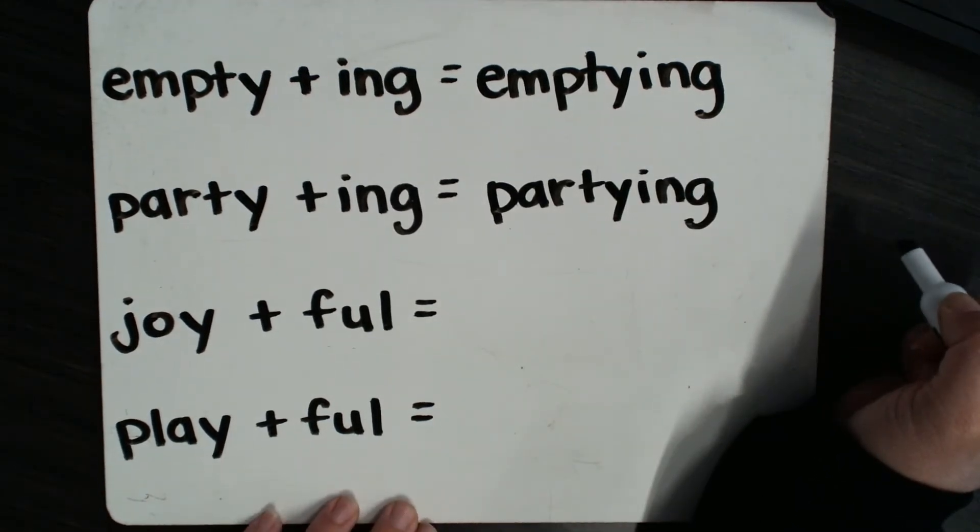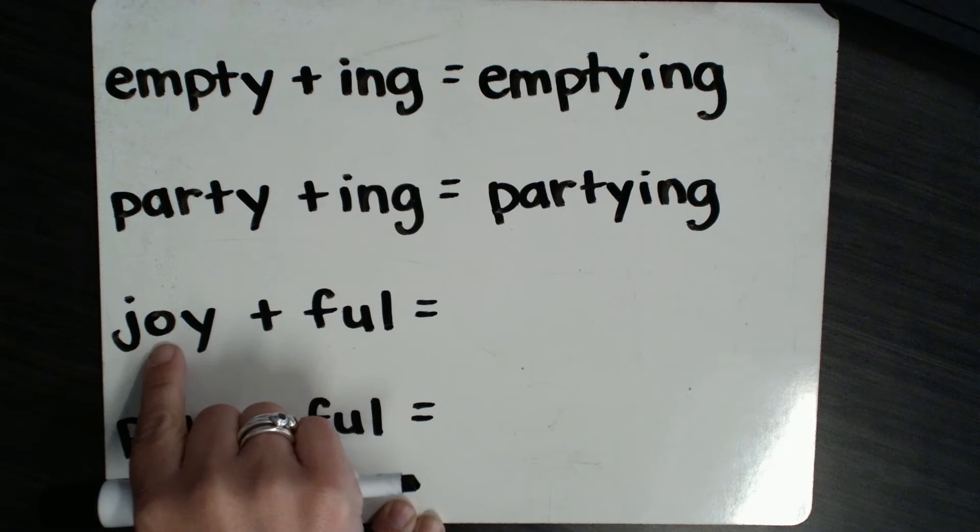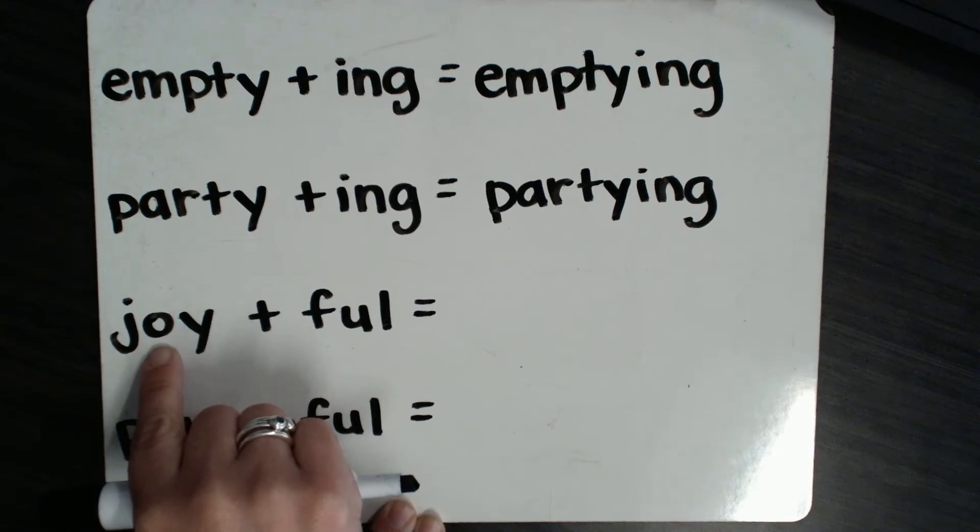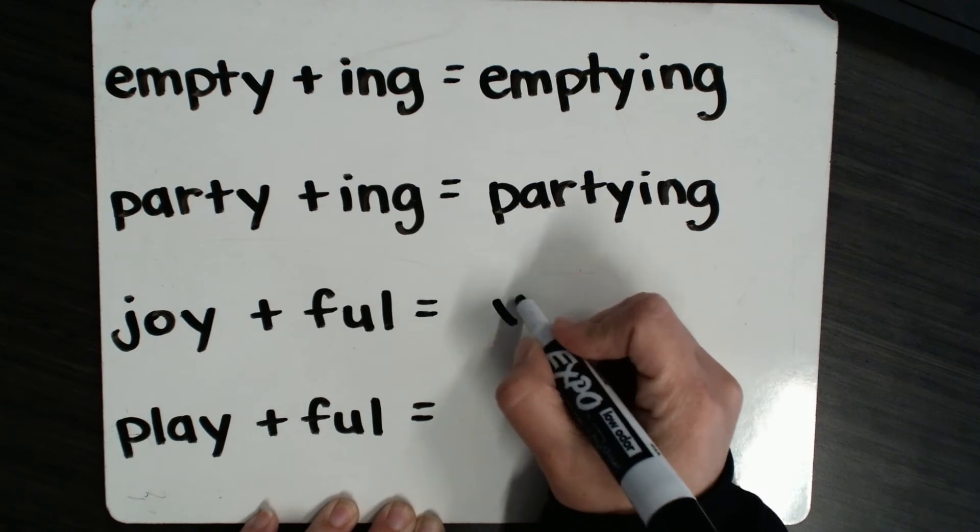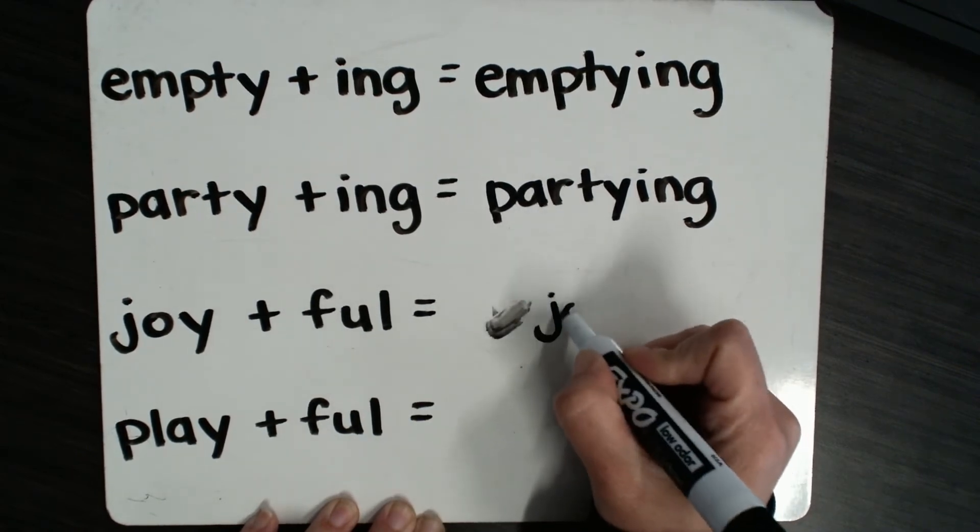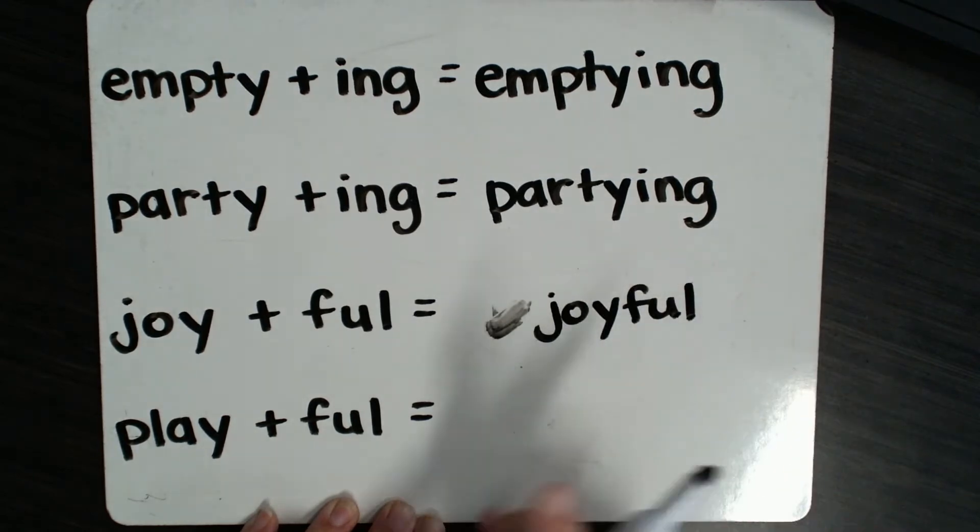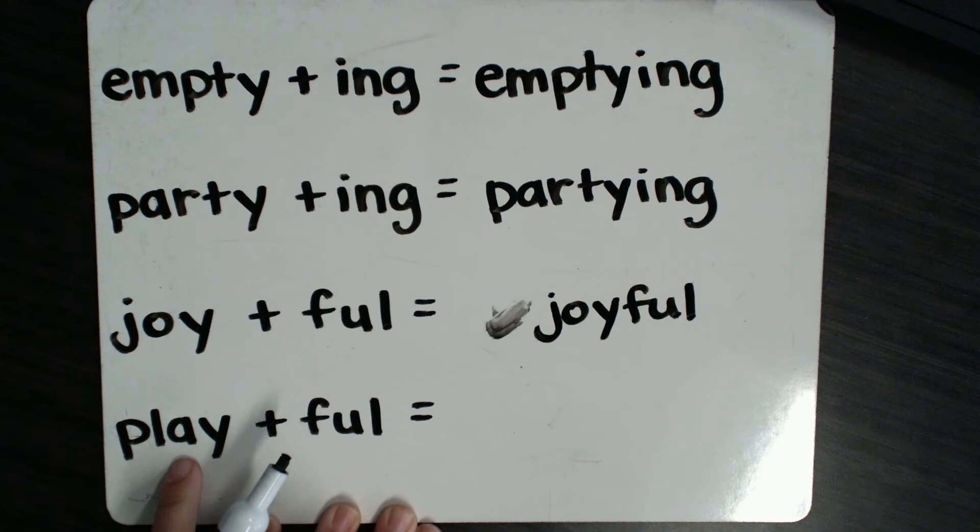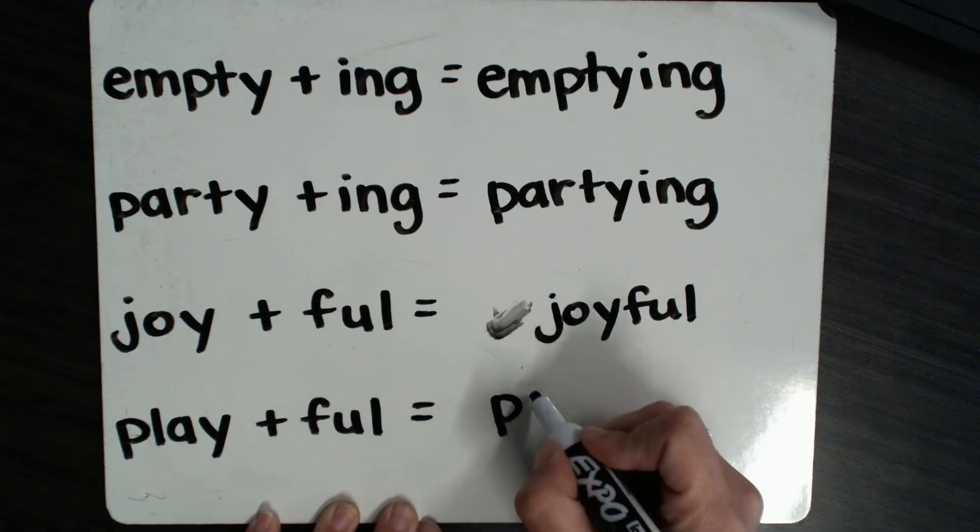Another time that we don't make the change is when the word ends in y, but it comes right after a vowel. So when we have vowel plus y, no change when we add that suffix. We have the word joyful, and same with play. We have a vowel right before that y, so we do not change the y to i, and we have playful.